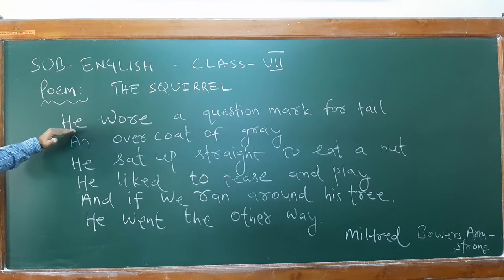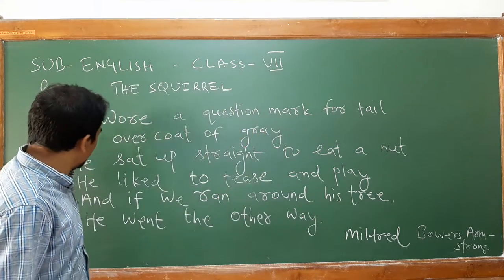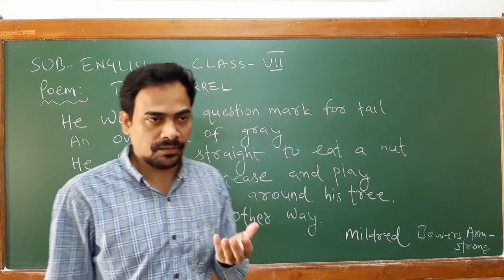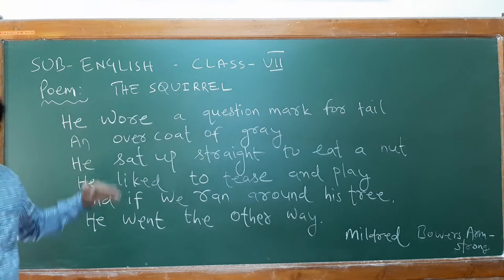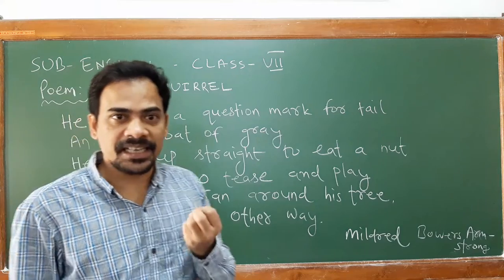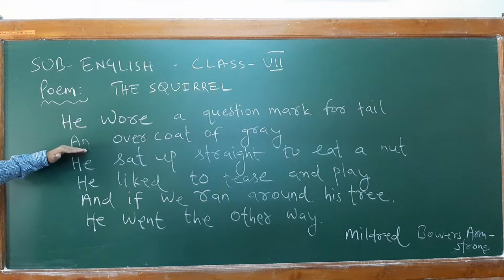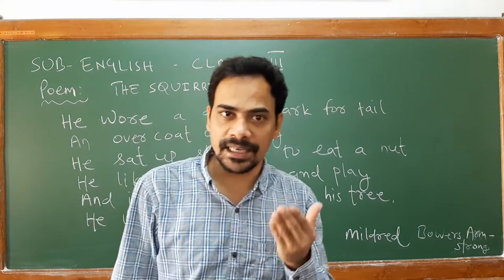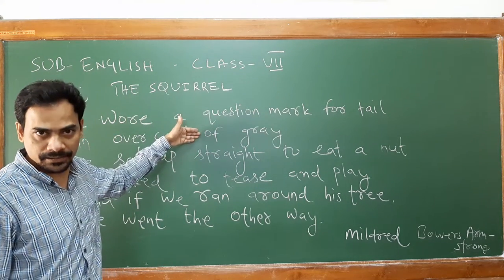Look at the first line of the poem: 'He wore a question mark for tail.' Now we have to understand whether the squirrel is really wearing a question mark, or whether the tail itself looks like a question mark. The second line says 'a coat of gray.' We also have to learn whether the squirrel is actually wearing something like a human being, or if it suggests something different.